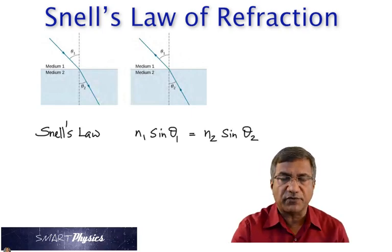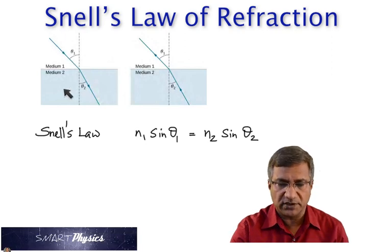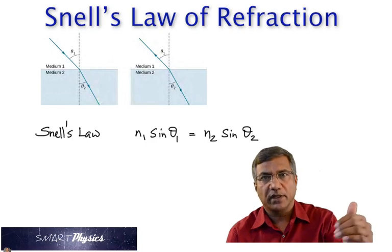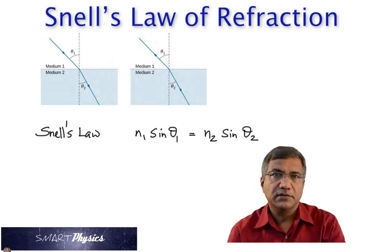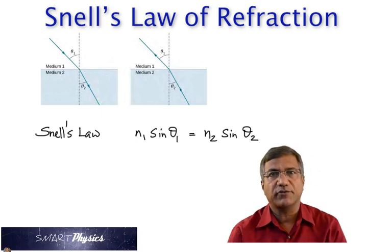N1 is the refractive index of this material. N2 is the refractive index of the material into which light is coming. Theta1 is the angle of incidence and theta2 is the angle of refraction.